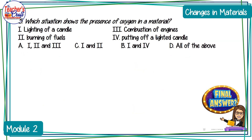Number five: which situation shows the presence of oxygen in a material? One — lighting of a candle; two — burning of fuels; three — combustion of engines; four — putting off a lighted candle. Letter A: one, two, and three; B: one and four; C: one and two; or D: all of the above.